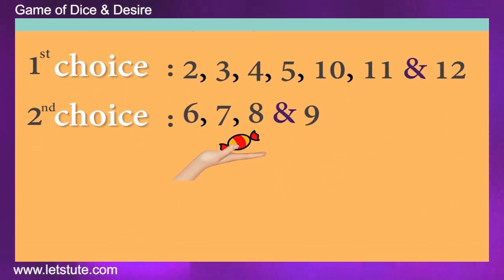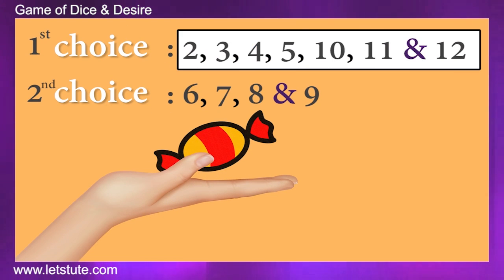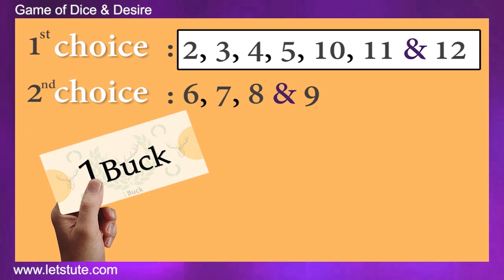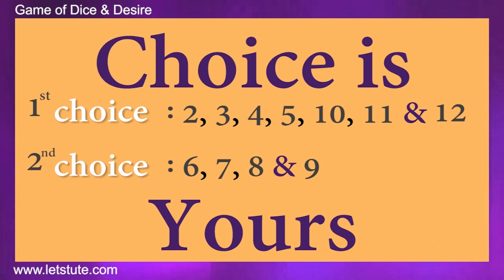And if the addition comes out to be numbers from the other set, you will have to give the cost of a chocolate. You are free to choose between any of these 2 sets. So, which one will you choose?